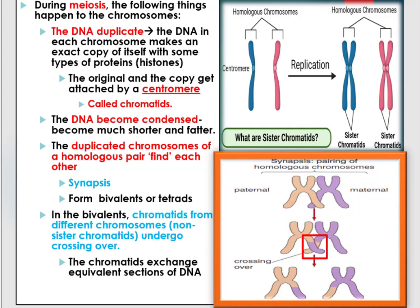In the bivalents, chromatids from different chromosomes — what we call non-sister chromatids — undergo crossing over. In this situation, the chromatids exchange equivalent sections of DNA, or fragments of DNA.